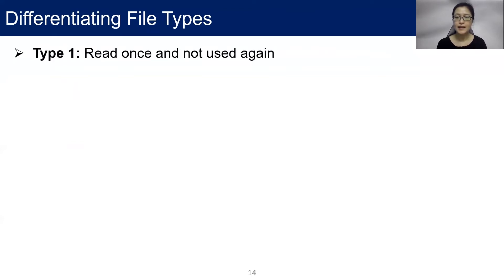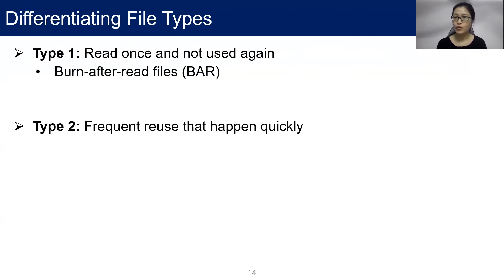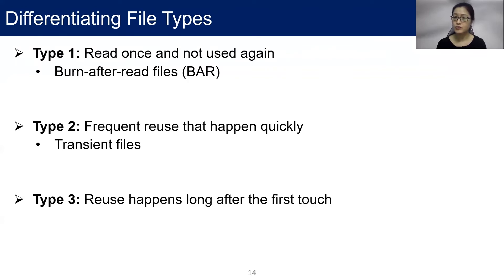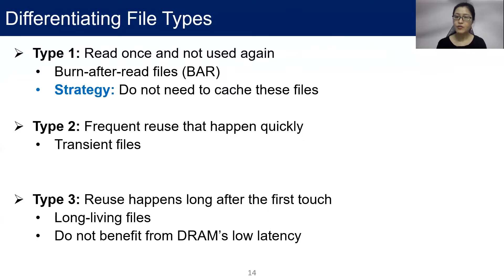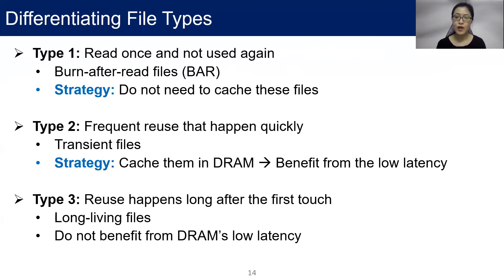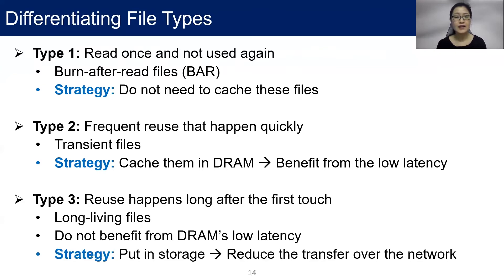The files only read once and not reused again, we call them BAR files. The files that will be frequently reused in a short period of time, we call them Transcend files. The files that could be reused after a long time, we call them Long-leaving files. BAR files do not need to be stored. Transcend files should be cached in DRAM so they can benefit from low reaccess latency. While long-leaving files are better stored in flash storage to reduce transfers over the network.